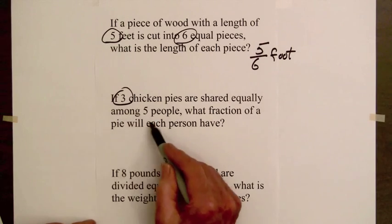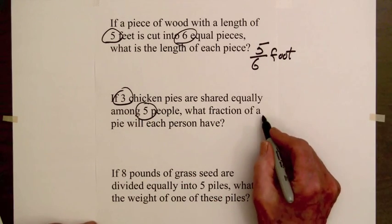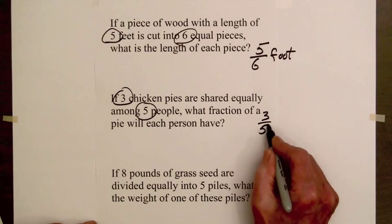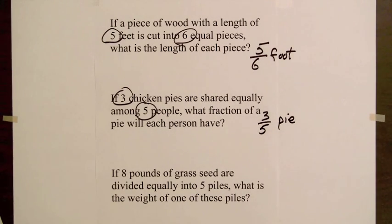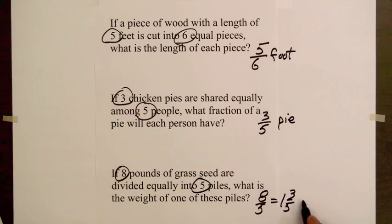In this case we divide three by five and obtain three-fifths of a pie for each person. If eight pounds of grass seed are divided equally into five piles, what is the weight of one of these piles? In this case we divide eight by five and get eight-fifths, which equals one and three-fifths pounds.